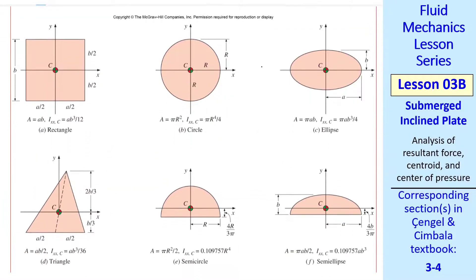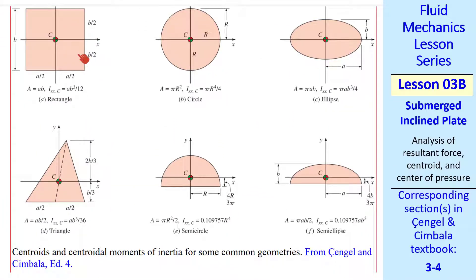You can look at the textbook or the next page for some common shapes. This is from our textbook. We already talked about a rectangle, centroid's in the middle, and here's IXXC, AB cubed over 12. For a circle of radius R, area is pi R squared, and IXXC is pi R fourth over 4. And you can see we have these other ones for ellipses, semi-ellipses, semi-circles, and triangles.